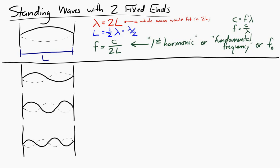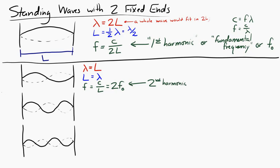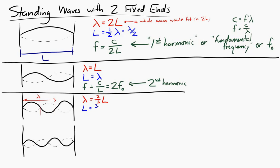In the next one, one entire wavelength is represented on the string. So the wavelength equals L. The frequency equals C over L, which is 2 times the fundamental frequency. This is called the second harmonic. In the next one down, the wavelength equals 2/3 of L, so L equals 3/2 λ. The frequency equals C over (2/3)L, which equals 3 times the fundamental frequency. This is called the third harmonic.